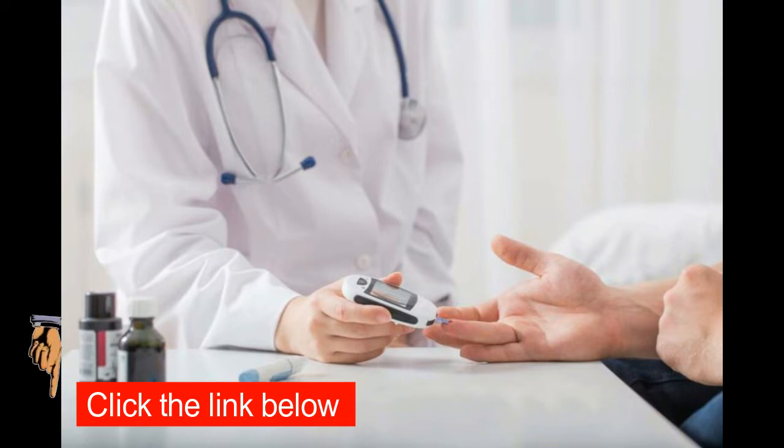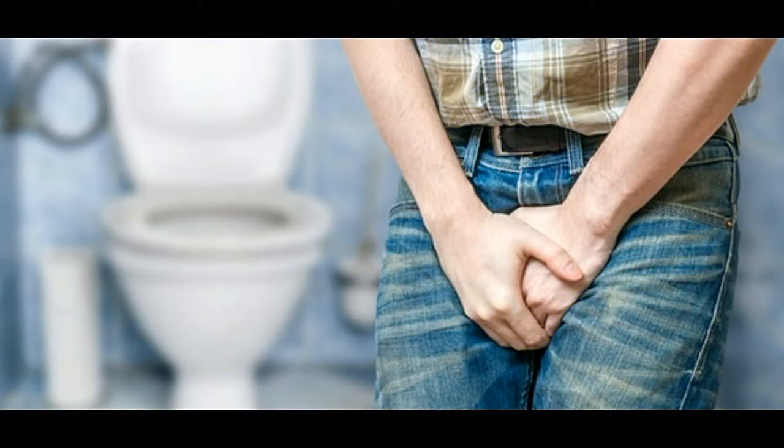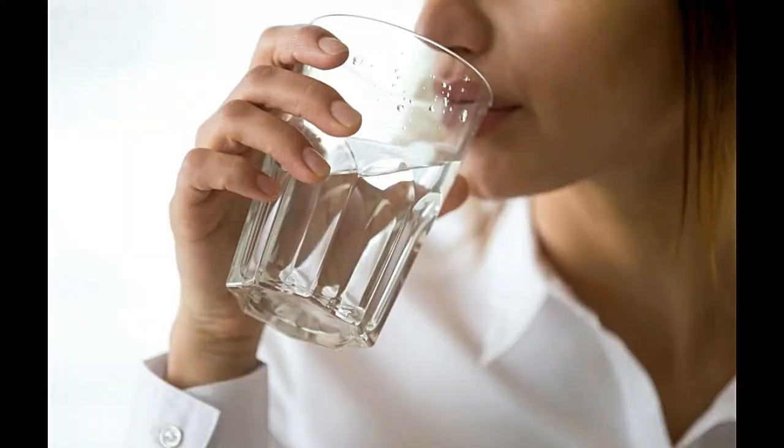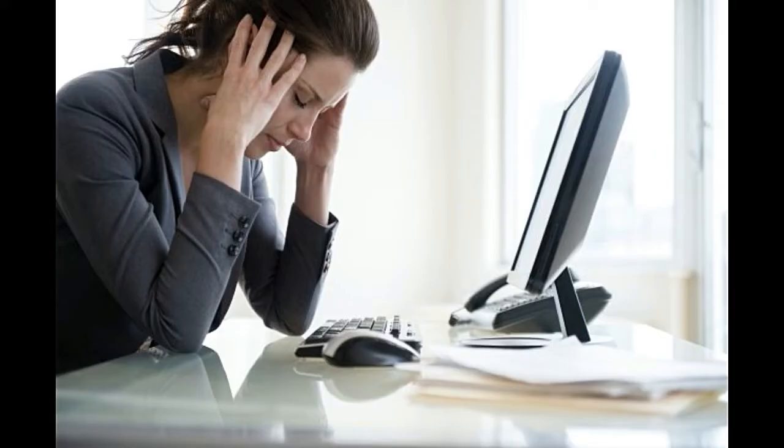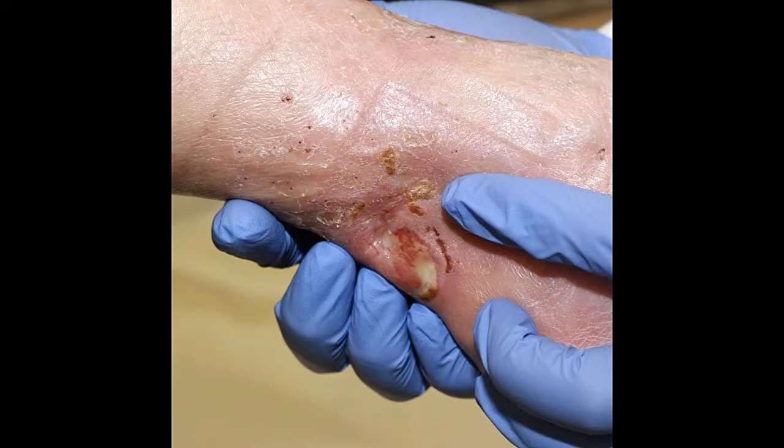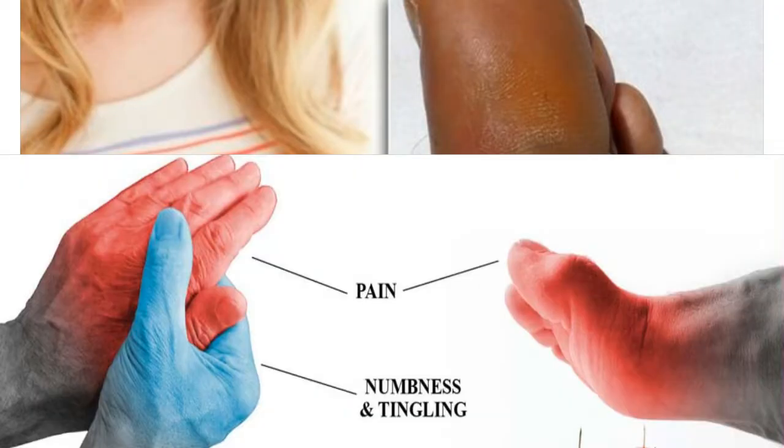Always tell the healthcare professionals treating you that you have diabetes. The early signs and symptoms of type 2 diabetes can include: 1. Frequent urination. 2. Increased thirst. 3. Always feeling hungry. 4. Feeling very tired. 5. Blurry vision. 6. Slow healing of cuts and wounds. 7. Tingling, numbness, or pain in the hands or feet. 8. Patches of dark skin.